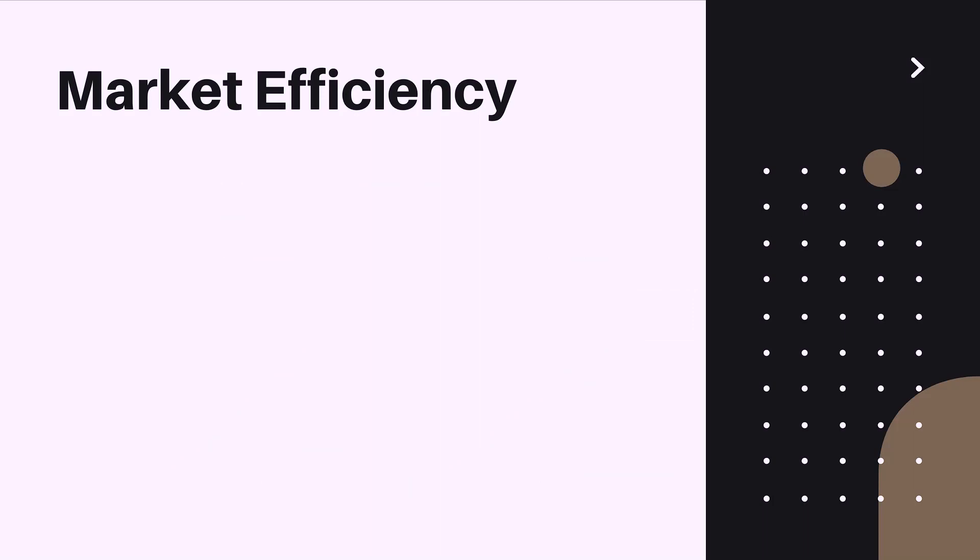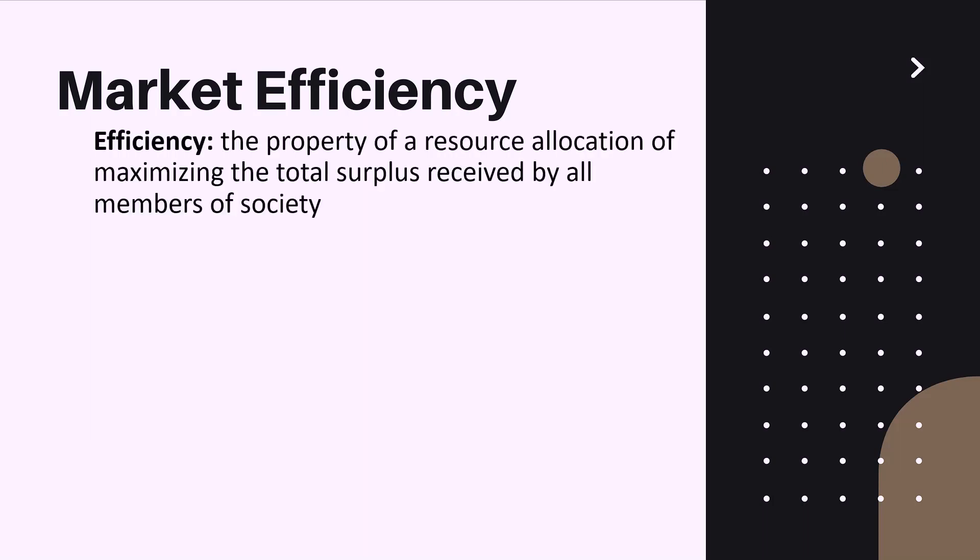Finally, let us discuss the concept of market efficiency. What is efficiency? Efficiency is the property of a resource allocation of maximizing the total surplus received by all members of society.